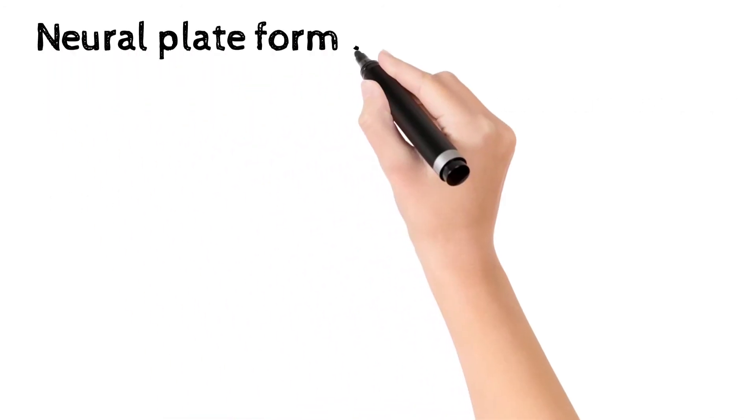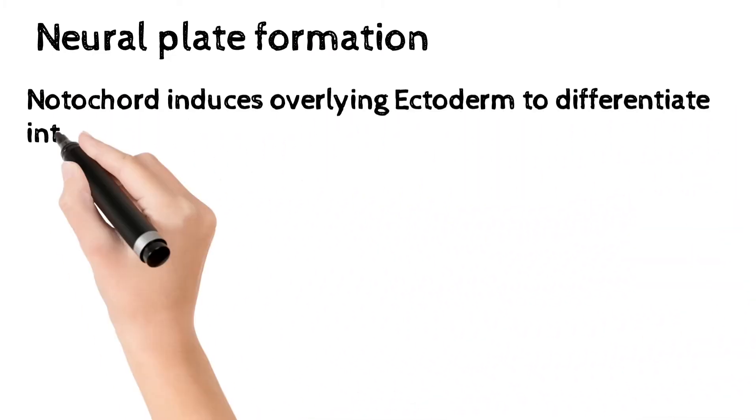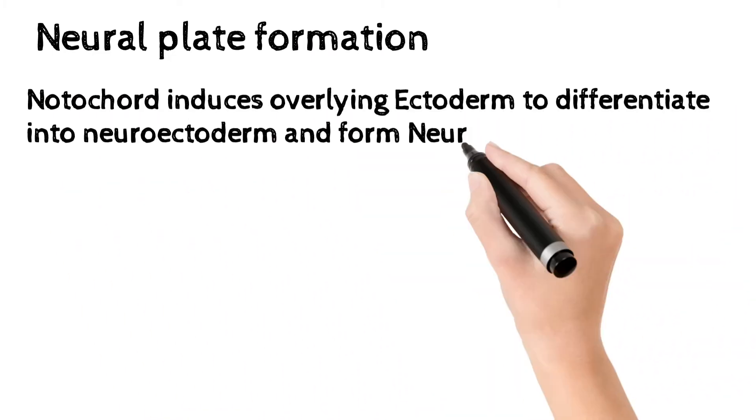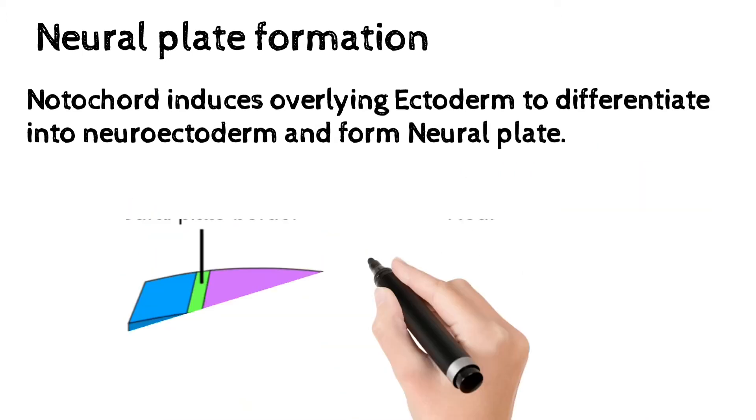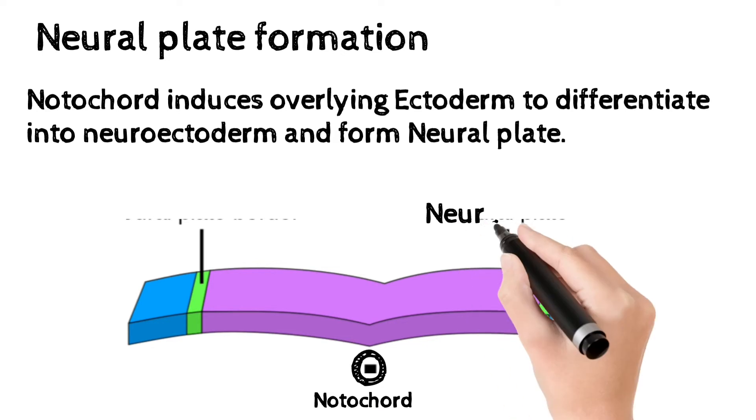Neural plate formation. Notochord induces overlying ectoderm to differentiate into neuroectoderm and form neural plate, if we see diagram. Notochord. Neural plate.